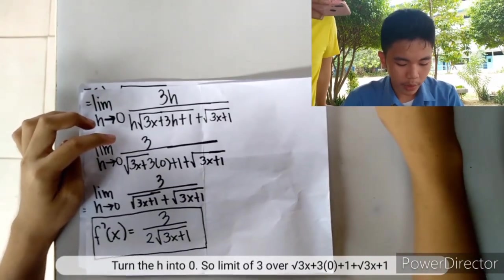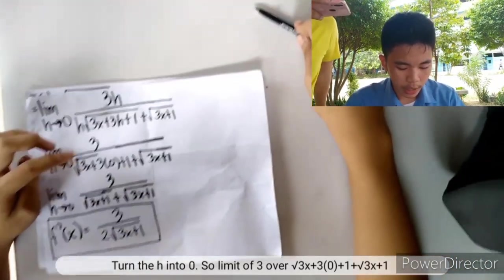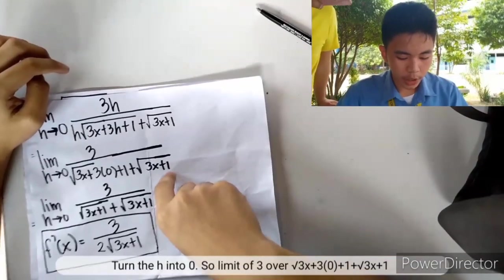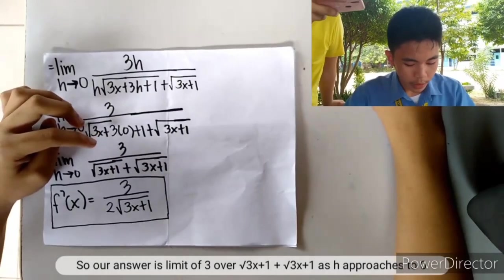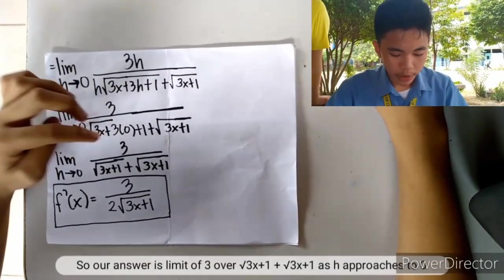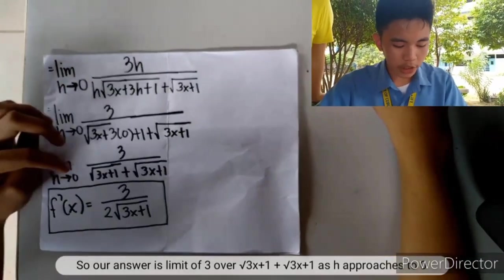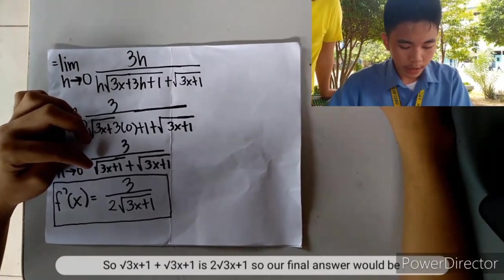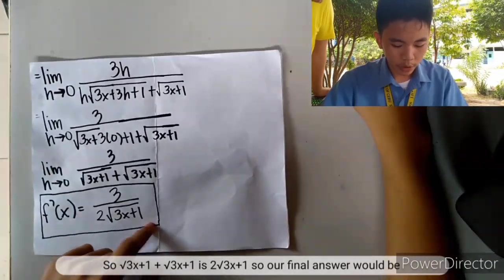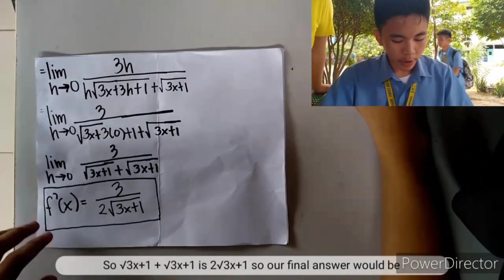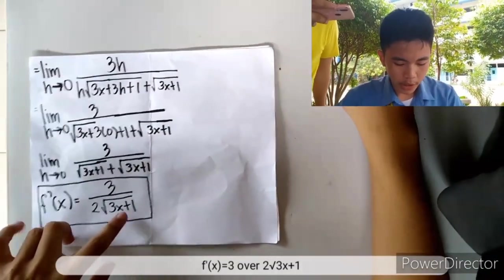After canceling h, we get the limit of 3 over the square root of 3x+1 plus the square root of 3x+1 as h approaches 0. Since the square root of 3x+1 plus the square root of 3x+1 equals 2 times the square root of 3x+1, our final answer is f prime(x) equals 3 over 2 times the square root of 3x+1.